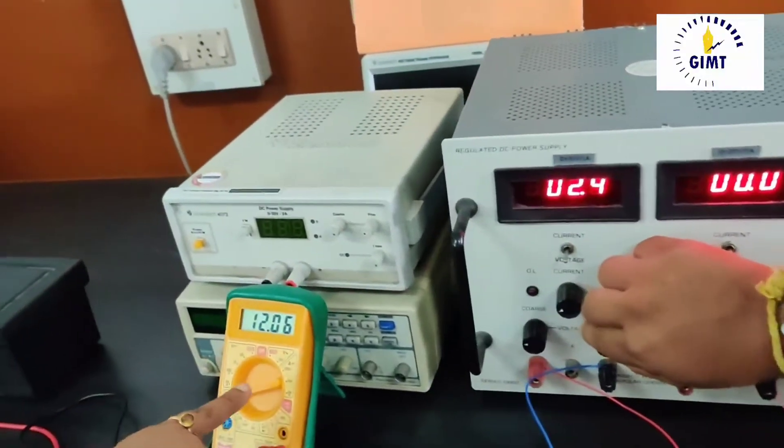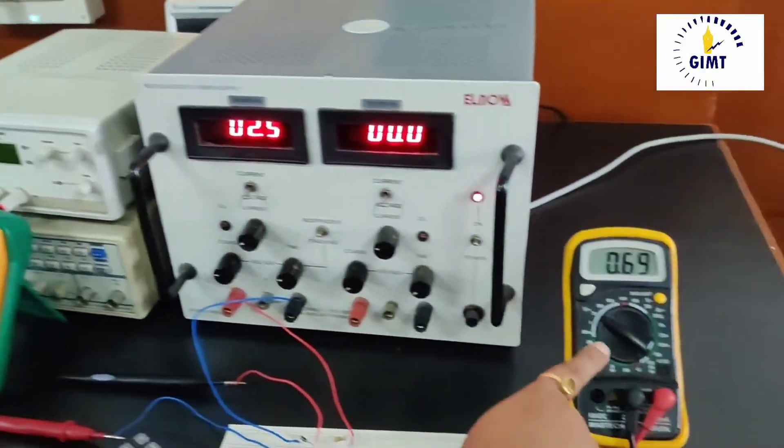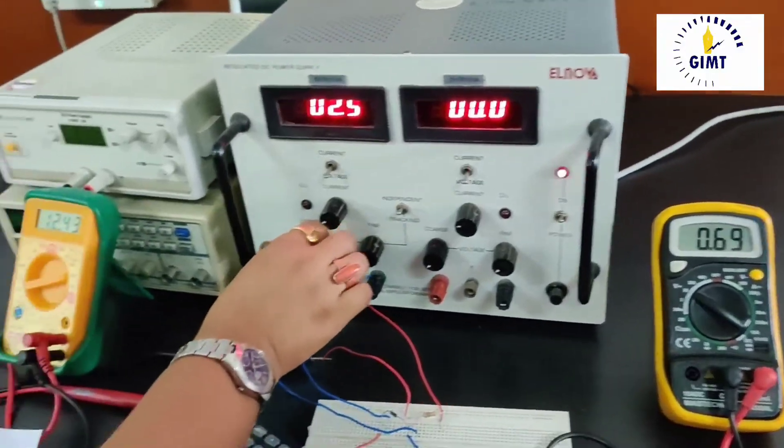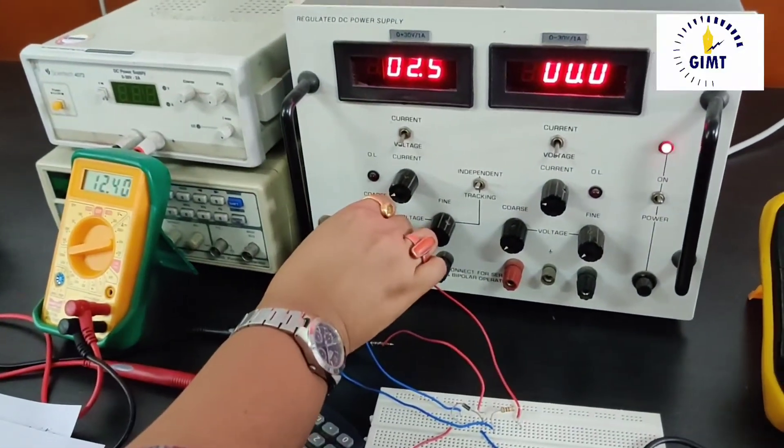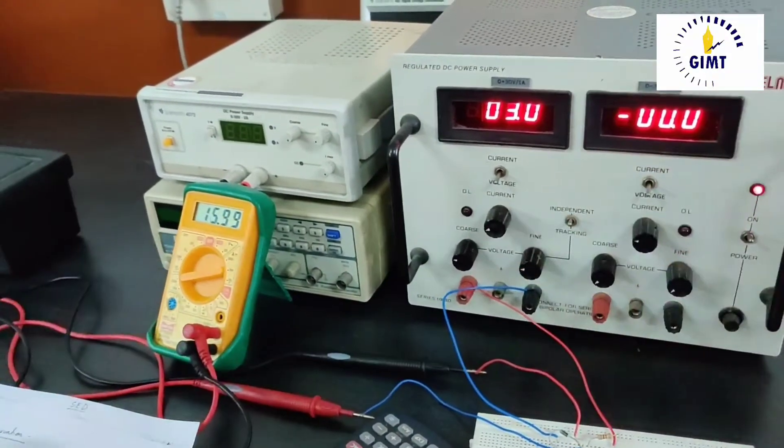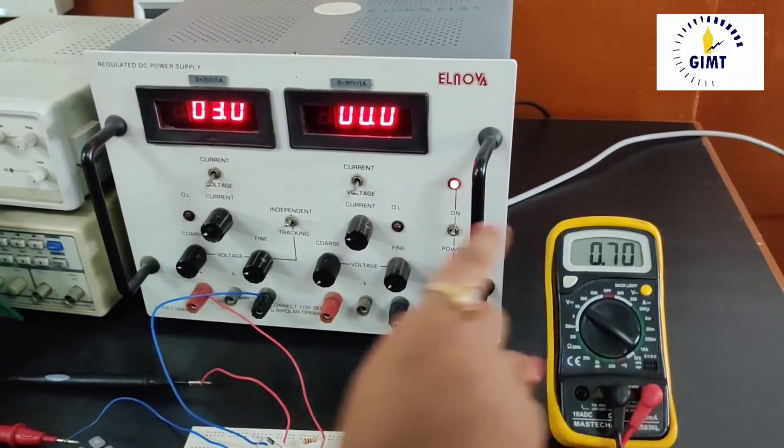Next let us see at 3 volt. At 3 volt we have again increase in diode current 15 milliampere and the diode voltage is 0.7 volt.